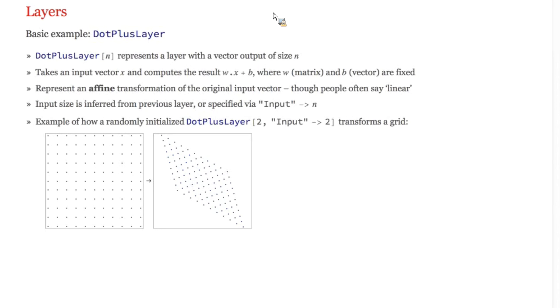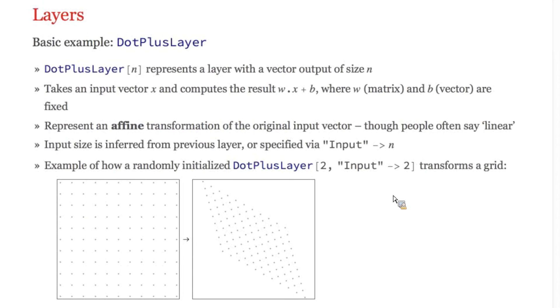Dot plus layers, also called fully connected layers in the literature, are a very common type of layer. They contain a weight matrix and a bias vector, and they effectively perform an affine transformation of the input vector to produce an output vector. Here's a visual representation of that. The weight and bias parameters are learned during training.